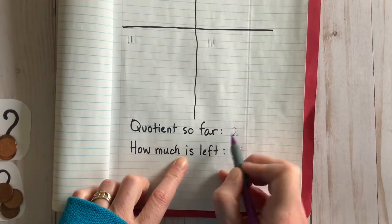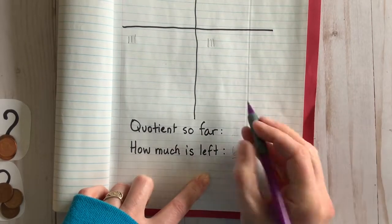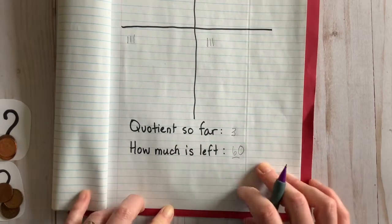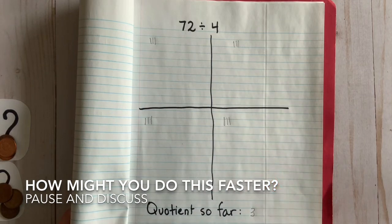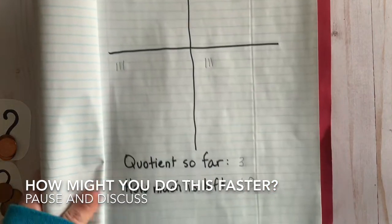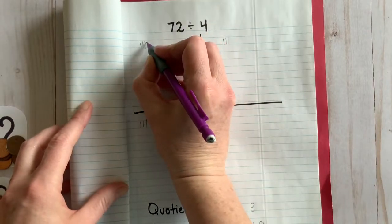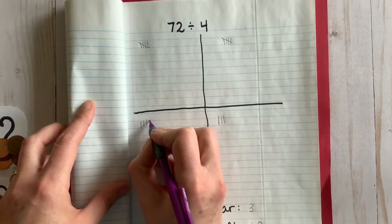Now I know what you're thinking: this is way slower than dividing with real materials, especially now that we need to keep subtracting to figure out how much of the dividend is left. I am very glad that you noticed. We can speed this up. How might you do it? Pause and discuss.